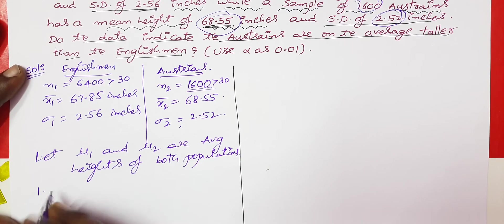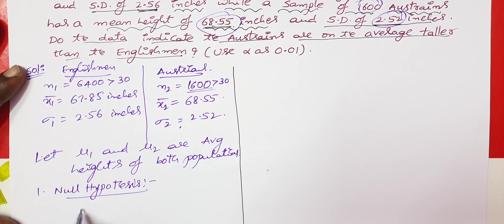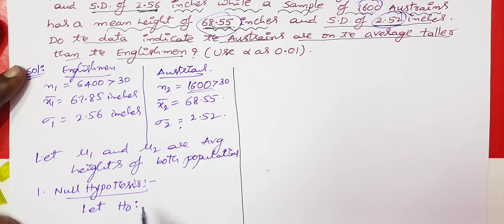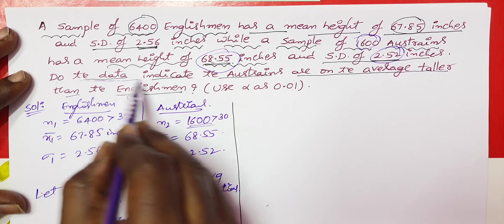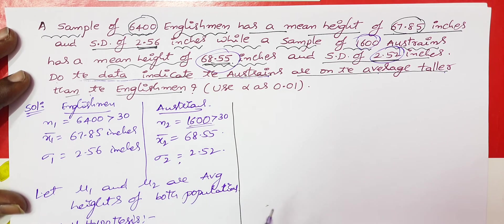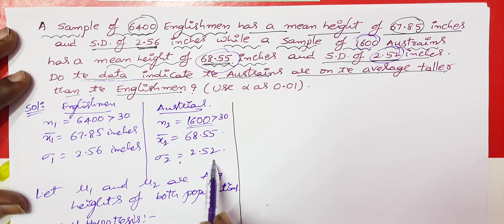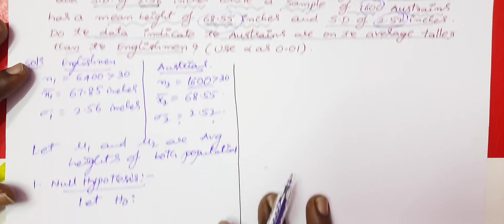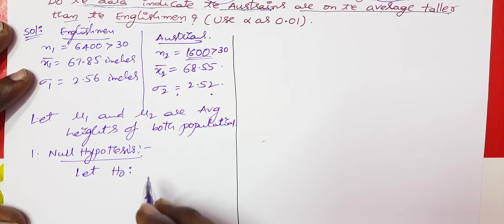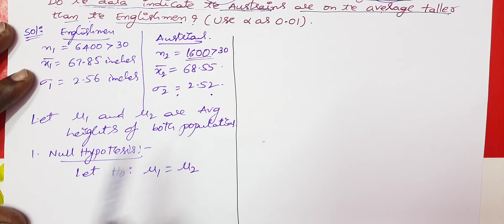What is the null hypothesis? The null hypothesis H0 is that both population average heights are the same — that is, mu1 is equal to mu2. We assume both population average heights are equal.